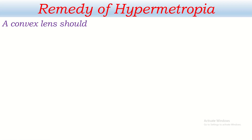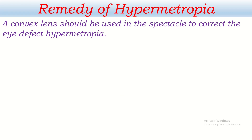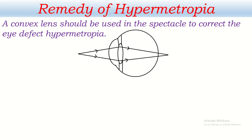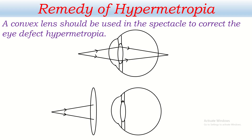The question is how to solve this problem. A convex lens should be used in the spectacle to correct the eye defect hypermetropia. Near objects are not focused on the retina — they are focused behind the retina. When a convex lens is used, the diverging rays of light coming from the near object are first converged by the convex lens of the spectacle, and then they reach the convex lens of the eye, which converges them further and focuses them on the retina. When only one lens was involved, the near object was focused behind the retina, but with the convex lens in the spectacle, the focusing point moves forward and the image falls on the retina.